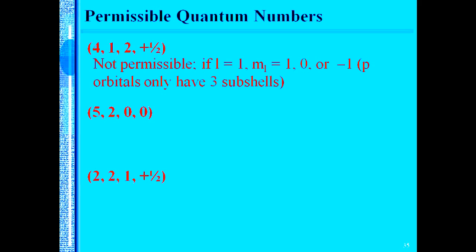How about if we have an N equaling 5, an L equaling 2, an M sub L equaling 0, and an M sub S equaling 0? This one would not exist either, because the spin quantum number will be either a plus half or a minus half.